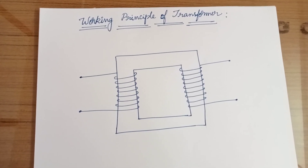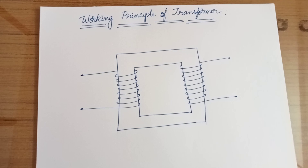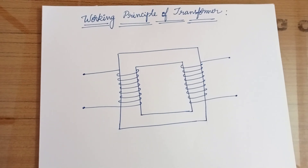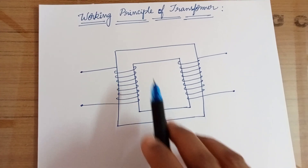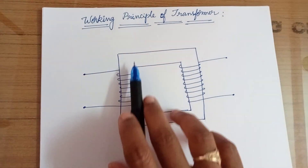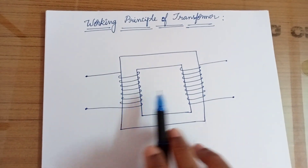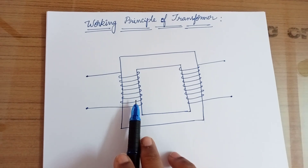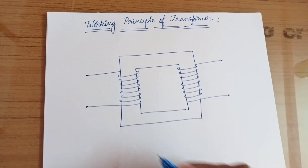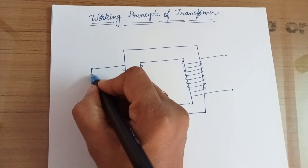In this video we are going to learn about the working principle of a transformer. Here we have considered a core type transformer — there are many different types of transformers depending on different parameters, but we are considering only the core type here for explanation. This area is called the core, and the core has four sides. On any two sides you will have some winding, and the sides on which the windings are mounted are called limbs.